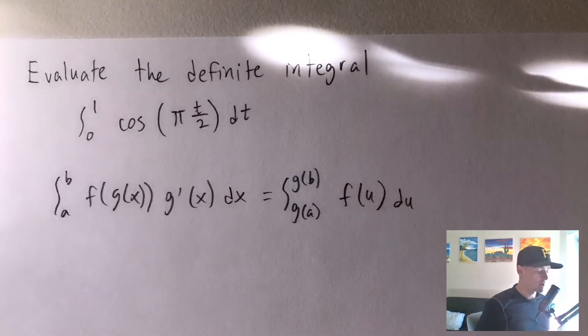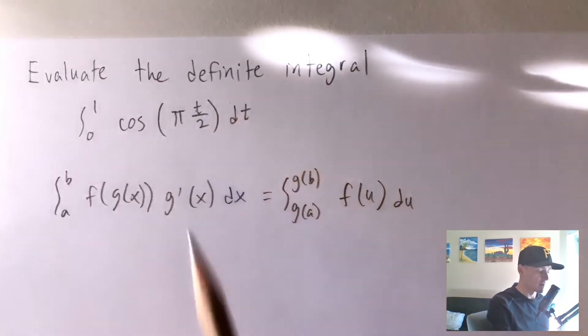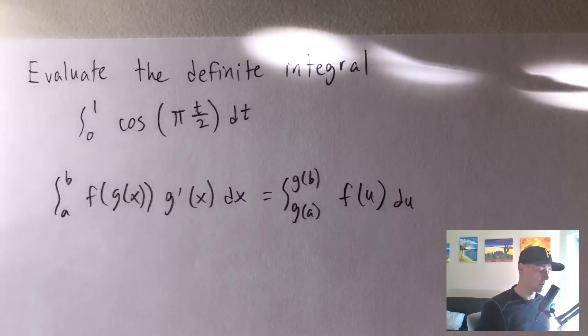So this is an interesting example because the u that we're going to pick is actually just going to be the entire thing within the parentheses here. And you might be thinking, well, that's weird because the derivative of pi times t over 2 is not somewhere else in the function.